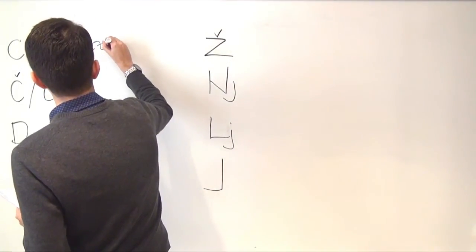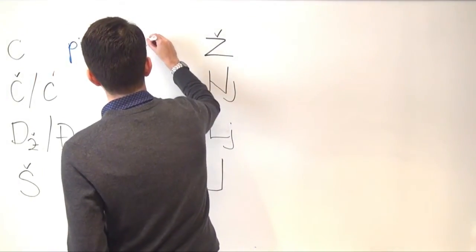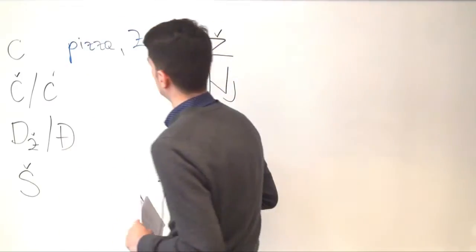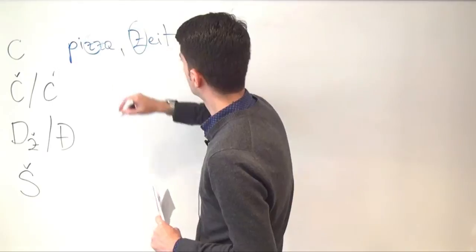So C sounds kind of like it's and in Italian you can hear it in the word pizza. Or in German you can hear it in the word tzatziki. So this is C.